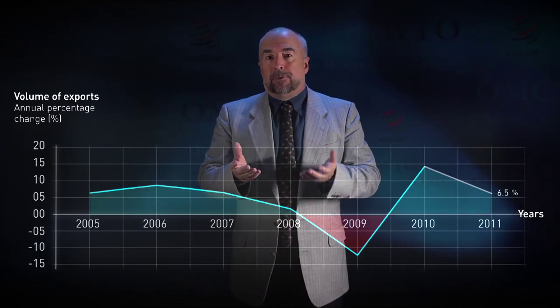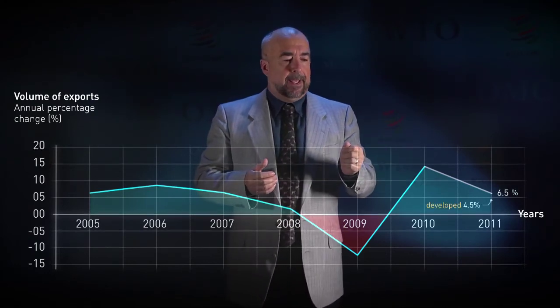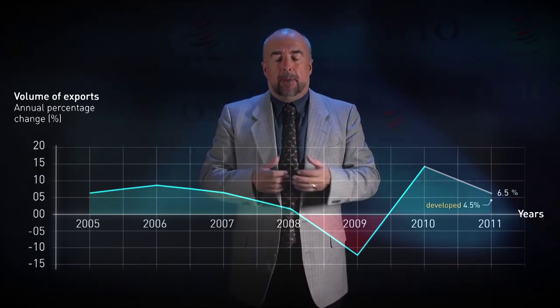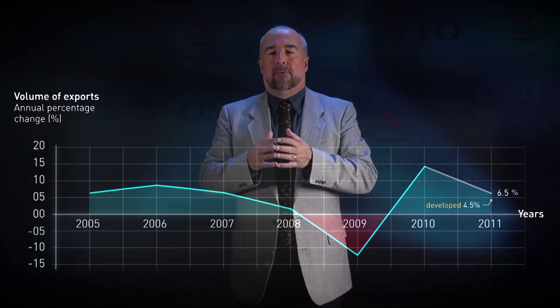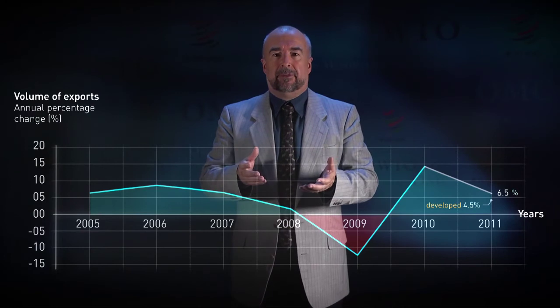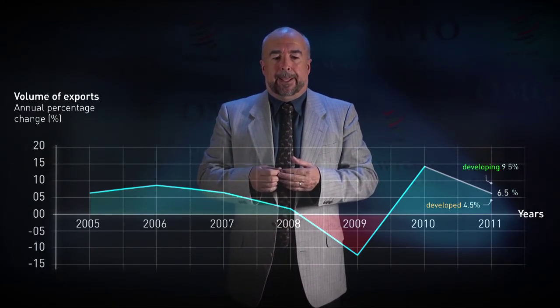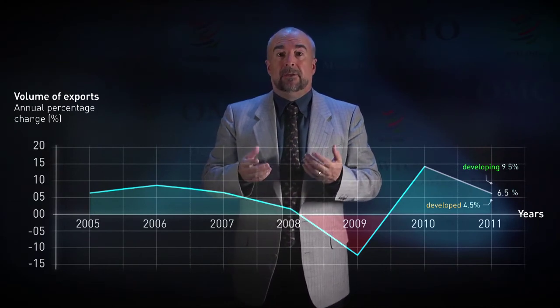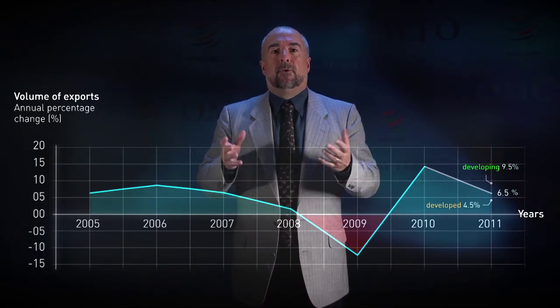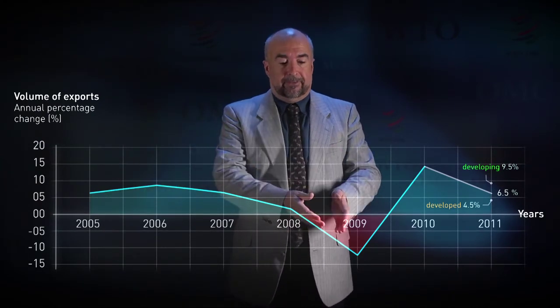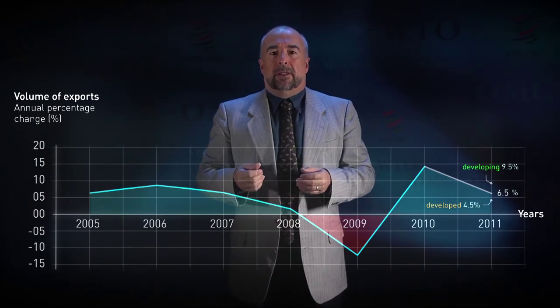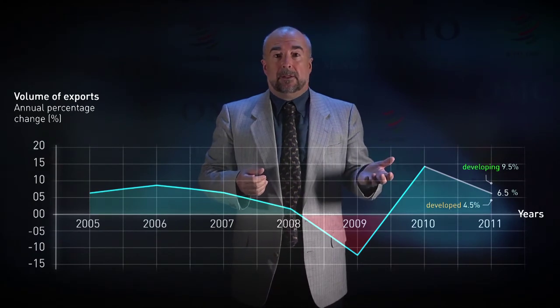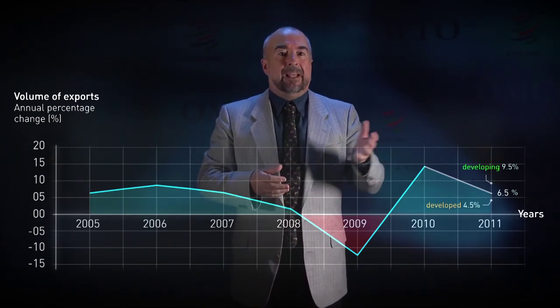Trade for developed countries will grow by 4.5%, affected in particular by what is happening in Japan, while the trade for developing countries will grow twice as fast at 9.5%. It would be wrong, nevertheless, to think that those are mediocre rates of growth. In fact, this year, trade is returning to normality. After four years of rollercoaster — from bubble to crisis to recuperation — international trade is now returning to normality. At 6.5%, we will still be slightly above the long-term average of 6% recorded from 1998 to 2008.